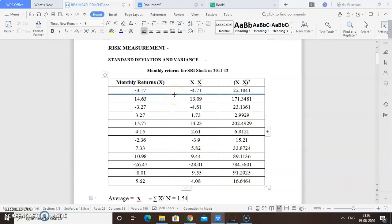This example has taken various returns calculated on a monthly basis between the years 2011 and 2012. These are all SBI stocks. Monthly returns have been taken for 12 months, and the returns are given for every month. For the calculation of standard deviation, the very first step is to find out the average, x-bar.